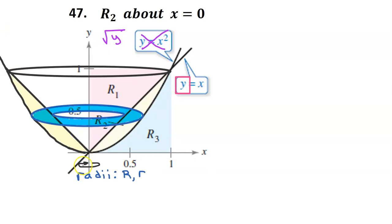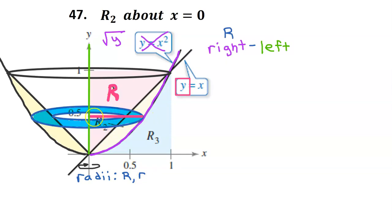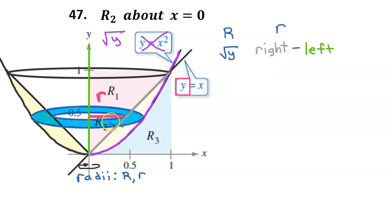Finding the volume of the solid is a three-step process. Step 1 is to find an expression for both radii of the washer. We need an expression for the radius of the outer disk, which I will call big R, and we will need an expression for the radius of the inner disk — the hole — which I will call small r. Let's start with big R. When the radius is horizontal, we can find an expression by subtracting the function on the right minus the function on the left. In this case, the function on the right is the square root of y, while the function on the left is zero. Radical y minus zero is just radical y. For the small radius, the function on the right is y and the function on the left is zero. y minus zero is just y.